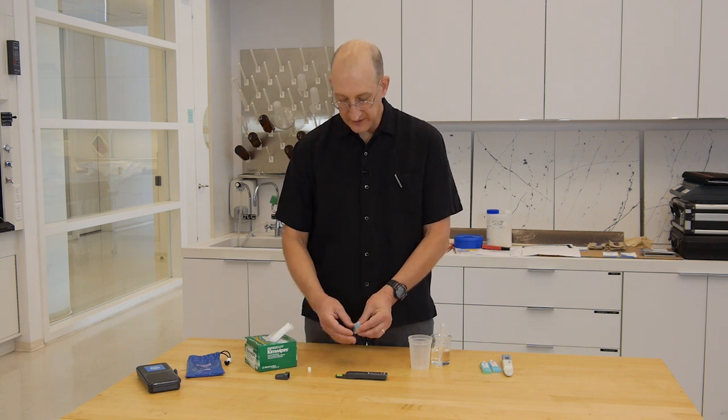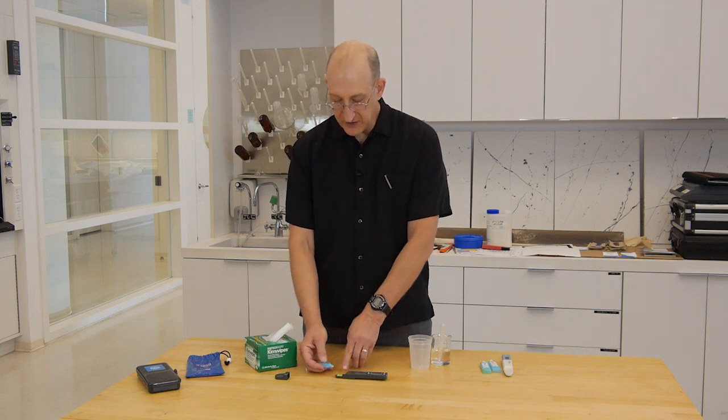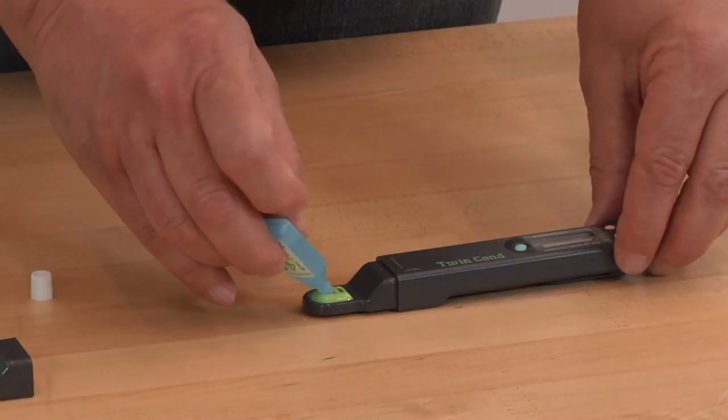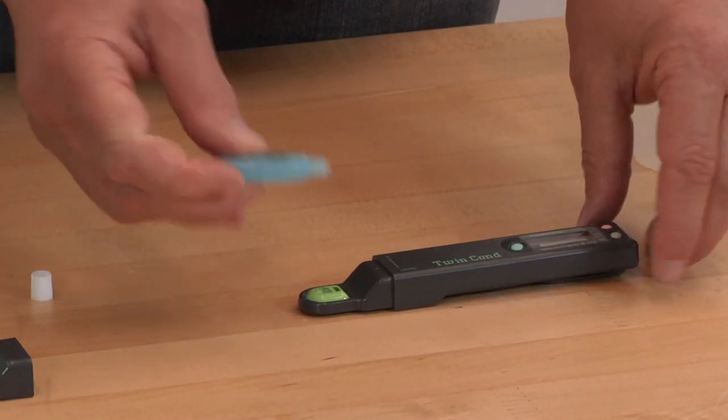The sample well is this little green thing. The measuring electrodes are here in the black section, and we just want to fill the reservoir with calibration solution.